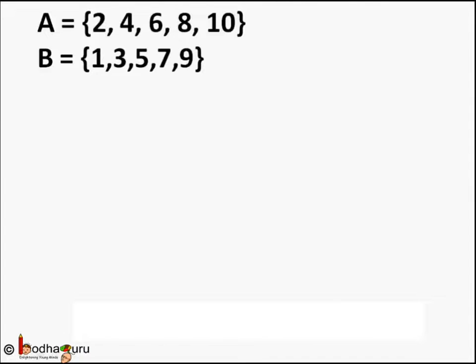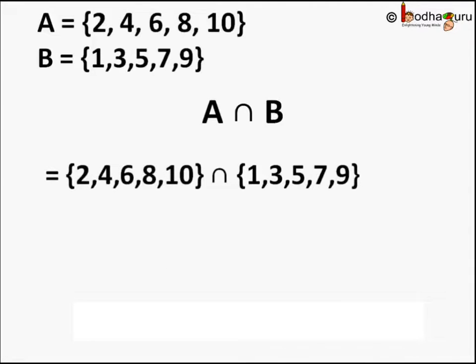Let us take another example. Set A has elements 2, 4, 6, 8 and 10. We have taken a few even numbers here. Set B has 1, 3, 5, 7 and 9. We have taken a few odd numbers here. So A intersection B would have elements which are common in both the sets. And in this example there is no number which is common between both the sets. Because a number cannot be even as well as odd. Hence A intersection B in this case would be a null set.